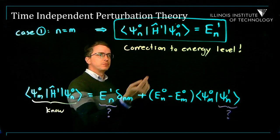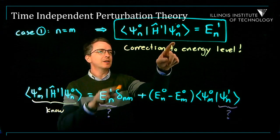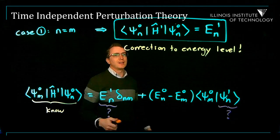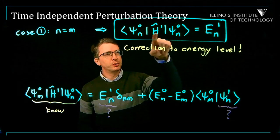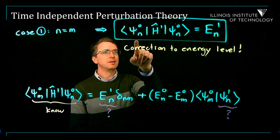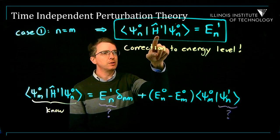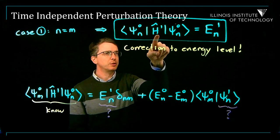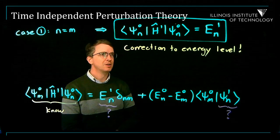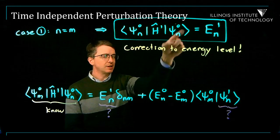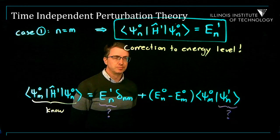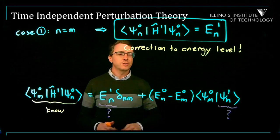The formula is very easy to use. I take the wave functions that I know if there's no perturbation, psi-n-zero, and I take the expectation value of the perturbed Hamiltonian H1 in that state. I know the perturbed Hamiltonian — the little modification — and I know the wave functions if there was no perturbation. Do this expectation value, and that gives me the corrections to the energy levels. That's a super useful formula.